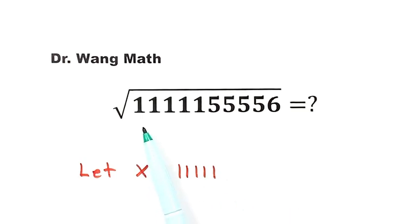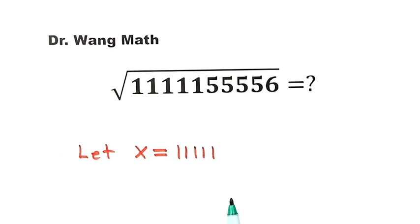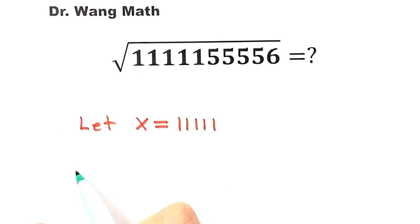Now let's write down this number. First, five ones, then followed by four fives. The last digit is a six.